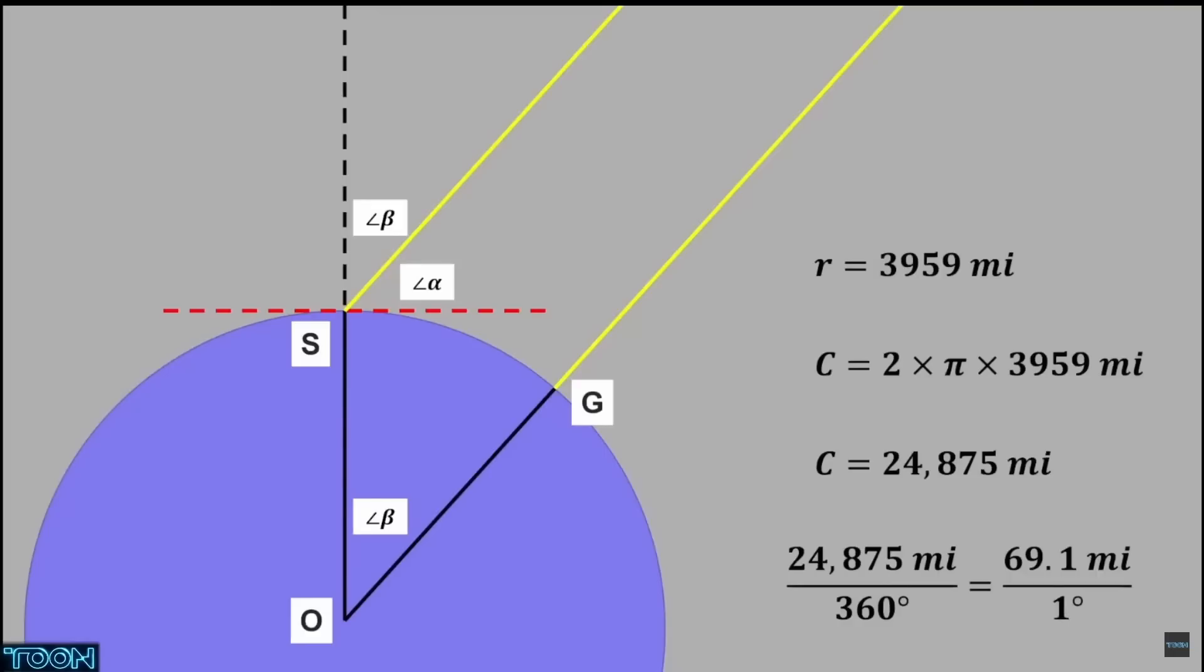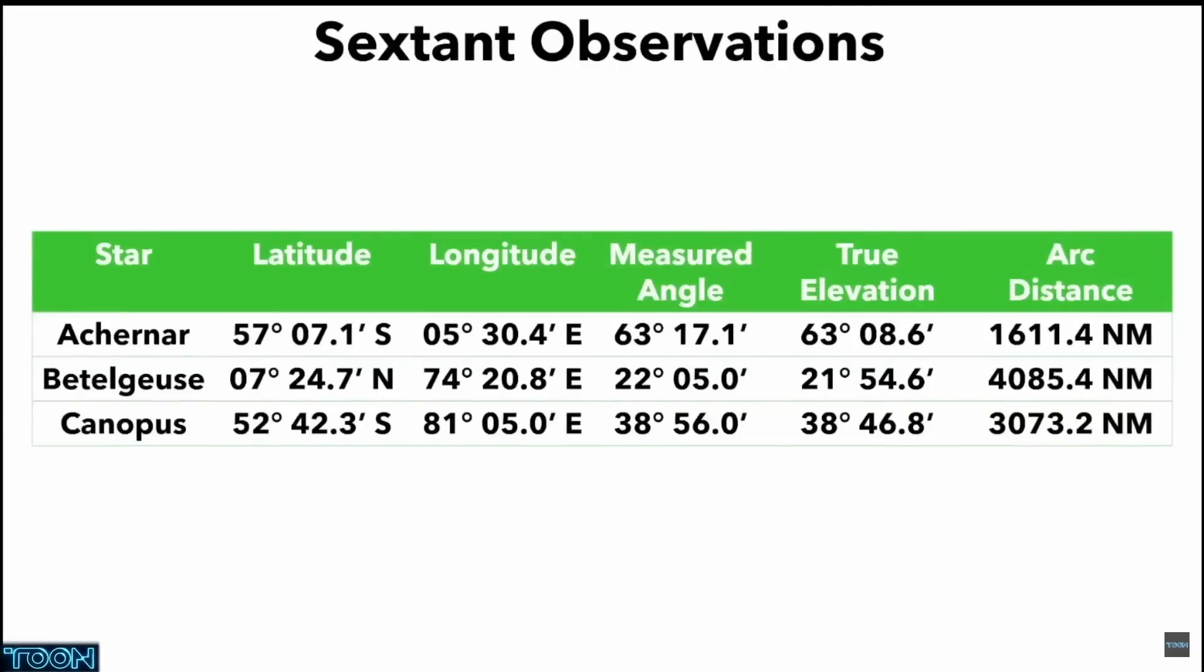So one of the big challenges for my opponent is to show the geometry for his model that justifies this 69 miles per degree. Okay, so you can either use the 69.1 miles per degree or 111 kilometers per degree, or like I've done here,